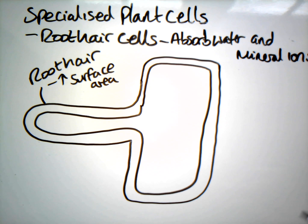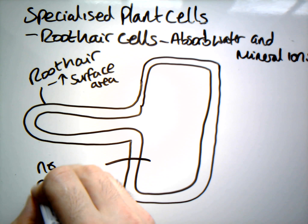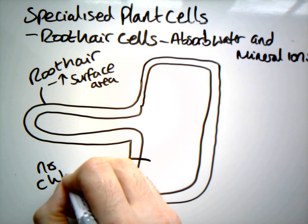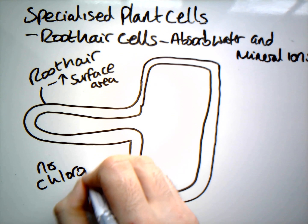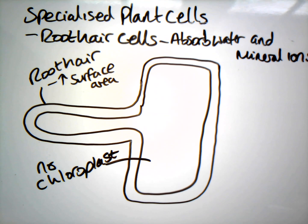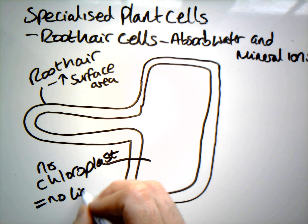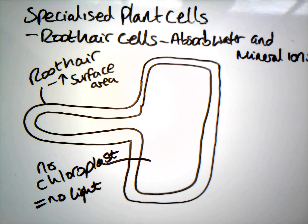We still have our nucleus and our cytoplasm, and so on. A key feature that we don't have, though, is chloroplasts. That's because the root hair cell is underground — and underground means no light, so no need for chloroplasts, meaning they can't photosynthesize.